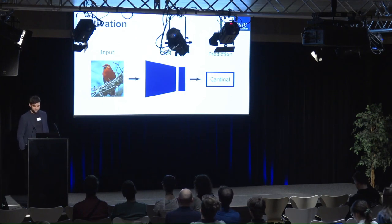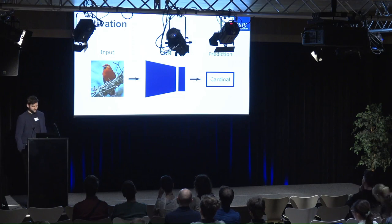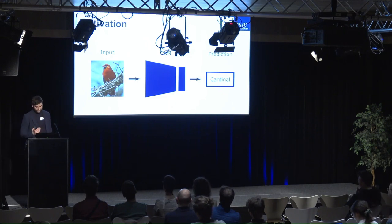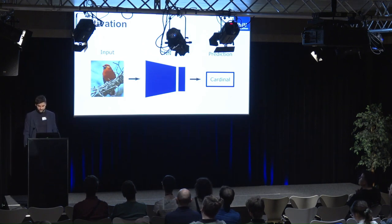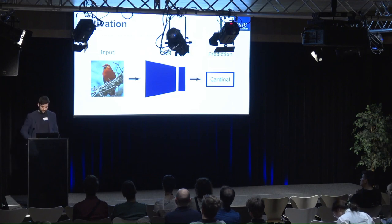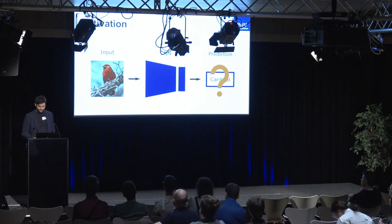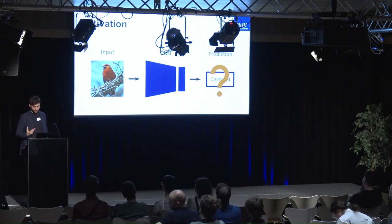Today's machine learning models are highly intransparent. Here's an example: on the left-hand side we see an input image of a bird, and in the center there is an image classifier based on a CNN. In this case it predicts the correct class — it's a cardinal. This is already a great achievement, but we as humans cannot easily understand why the prediction was made, because the models are quite complex. In this work we contribute to making predictions of image classifiers explainable and these models more transparent to users.